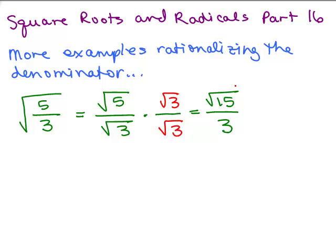That's the answer. You cannot cancel that 3 into the 15. Remember that 3 is a whole number, whereas 15 is underneath the square root — it's very different.